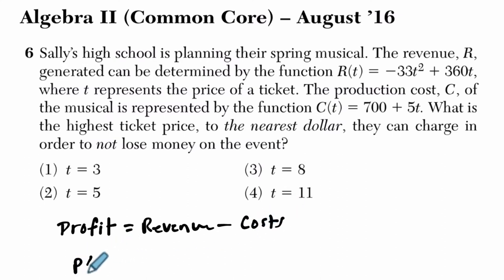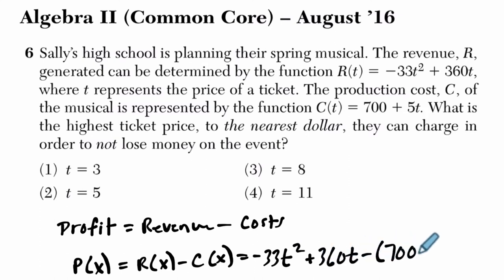So in terms of a function, I'll call this P of X for profit. It's going to equal R of X minus C of X. And that's just going to be negative 33T squared plus 360T minus 700 minus 5T.